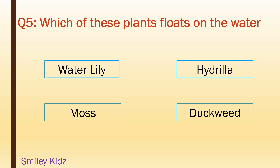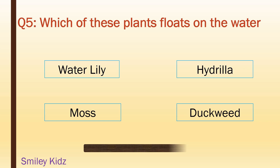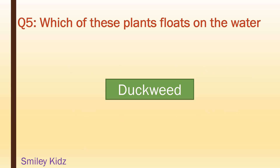Which of these plants float on the water? Water lily, hydrilla, moss, duckweed. Your time is up. And the right answer is duckweed.